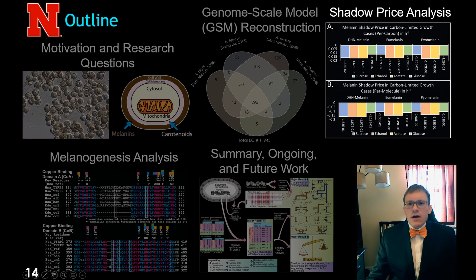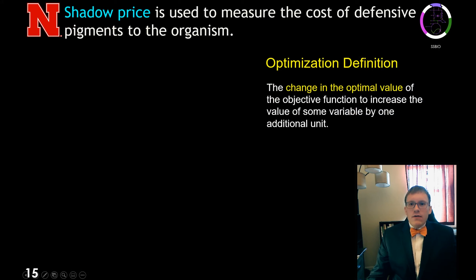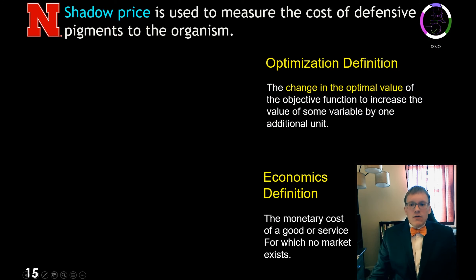Once we had reconstructed this genome-scale model of metabolism, which we called iEDE-2091, we performed a shadow price analysis to study the cost of the defensive pigments to the organism. Shadow price is the change in the optimal value caused by changing some variable by one unit. It is usually used in economics to indicate the cost of a good or service for which no market exists.